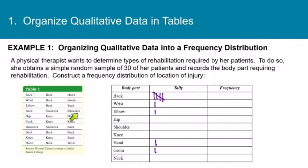And then we'll have back, shoulder, shoulder, and hip, knee, hip. Neck, knee, knee. Shoulder, shoulder, back. Back, back, back. And then knee, knee, back. And then hand, back, back, wrist. Okay, so these are our tally marks.